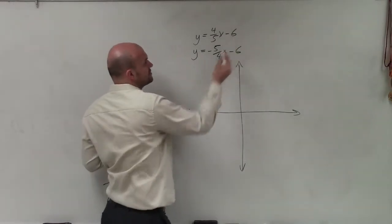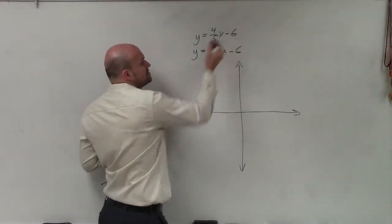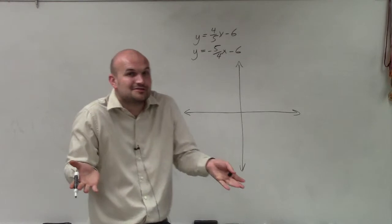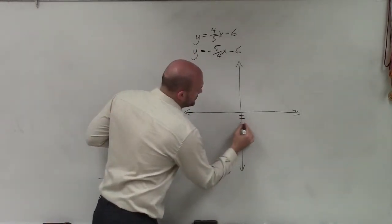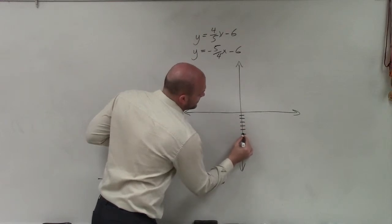So to go ahead and do this, we can graph these individually. We notice that they share the same y-intercept. Well, if they share the same y-intercept, then they have to intersect at that point: negative 1, 2, 3, 4, 5, 6.